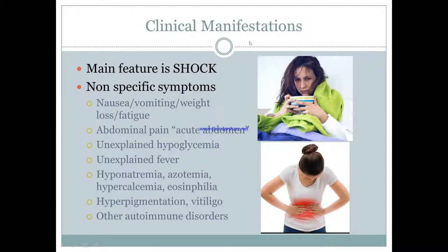What are the clinical manifestations? The main feature is shock — cortisol controls blood pressure, and without it you'll be hypotensive, not perfusing your end organs, causing shock. But if it's chronic, you'll initially present with nonspecific symptoms: nausea, vomiting, weight loss, fatigue, looking very sickly. You might have acute abdomen with abdominal pain, fevers, electrolyte imbalances, hyperpigmentation only if it's primary, and other autoimmune disorders because in the Western world this is mainly an autoimmune problem.